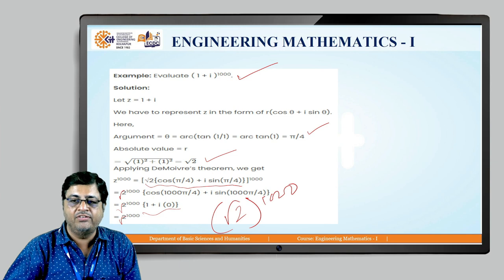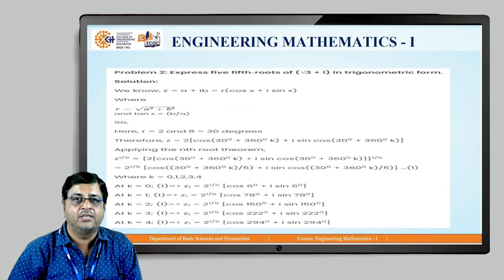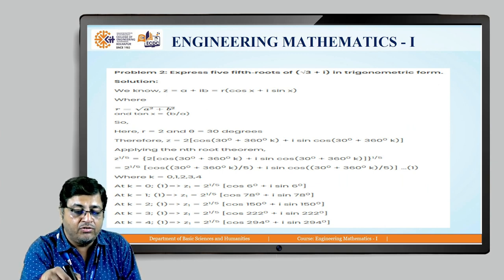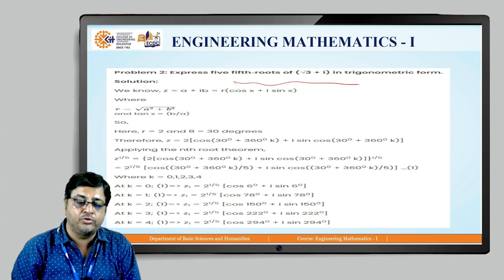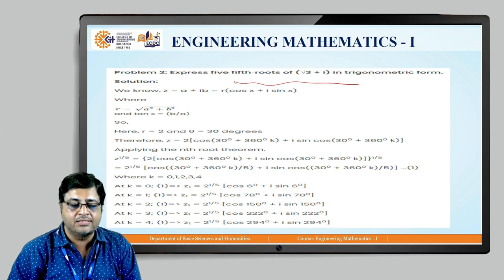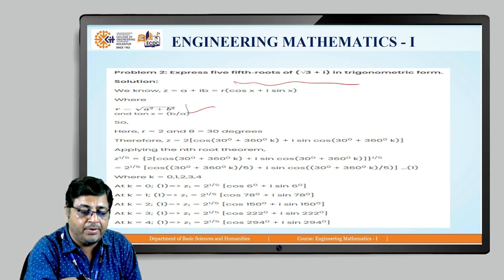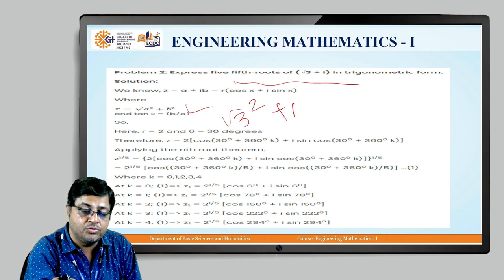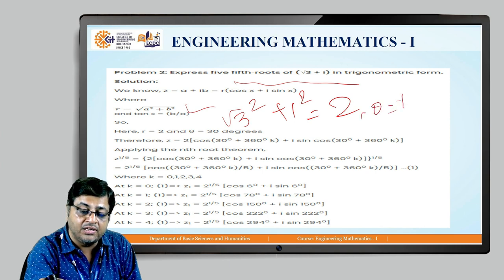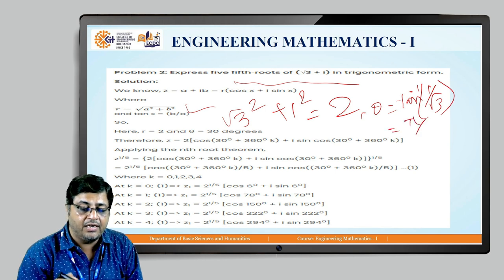Let us see one more example. Now here we will see how to find the nth roots of a complex number. Starting with the second example, where we have to find the 5 roots, or the fifth root of √3 + i. So r will be √(3² + 1²), which is equal to 2. And θ will be tan⁻¹(1/√3), which is π/6, that is 30 degrees.